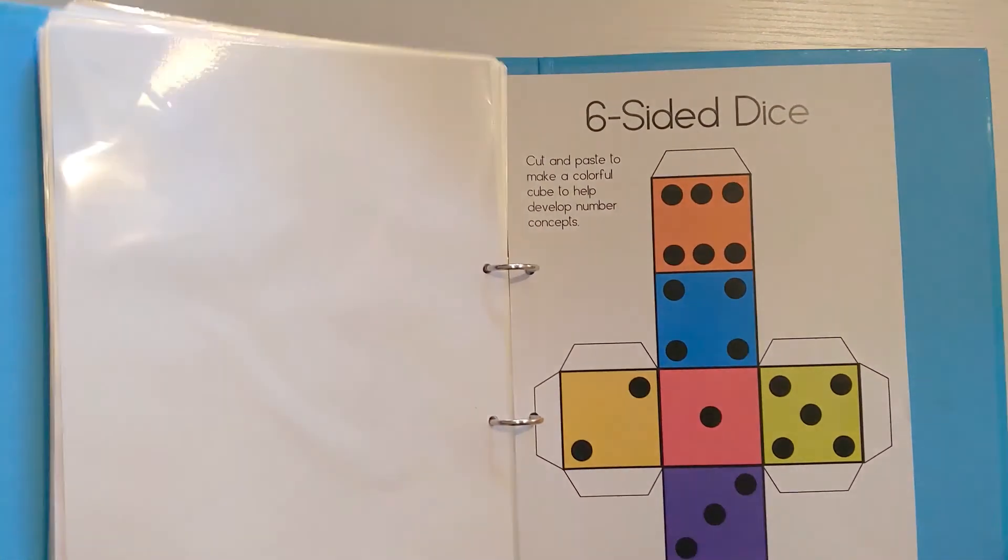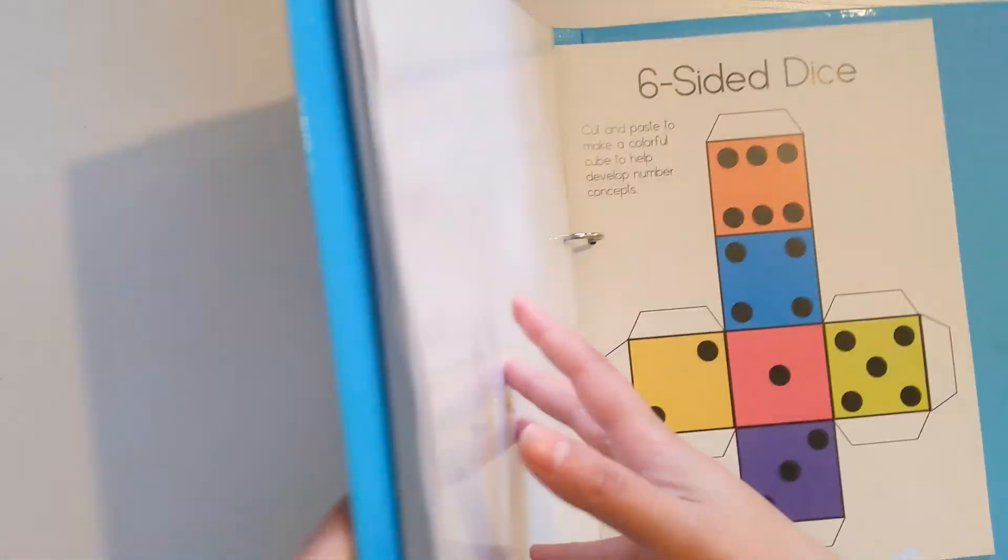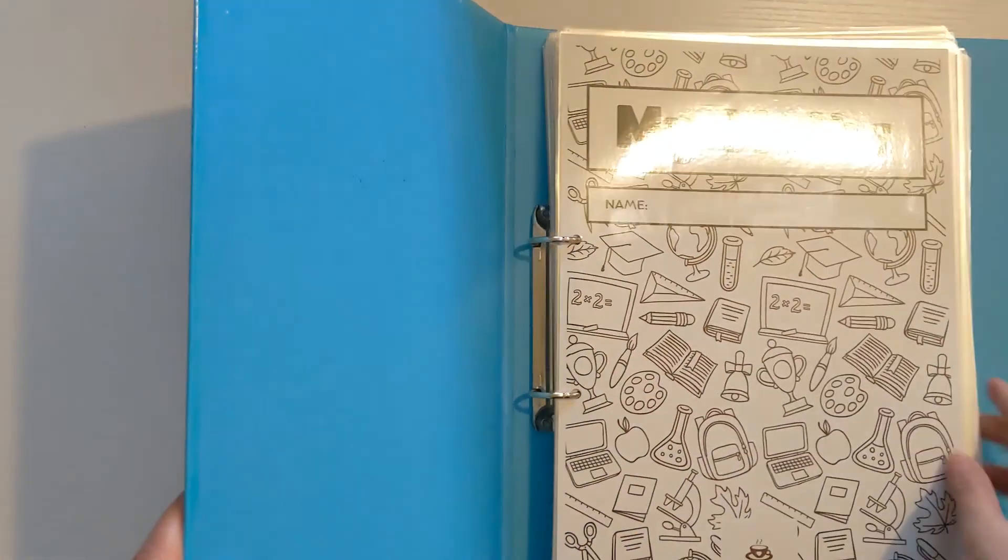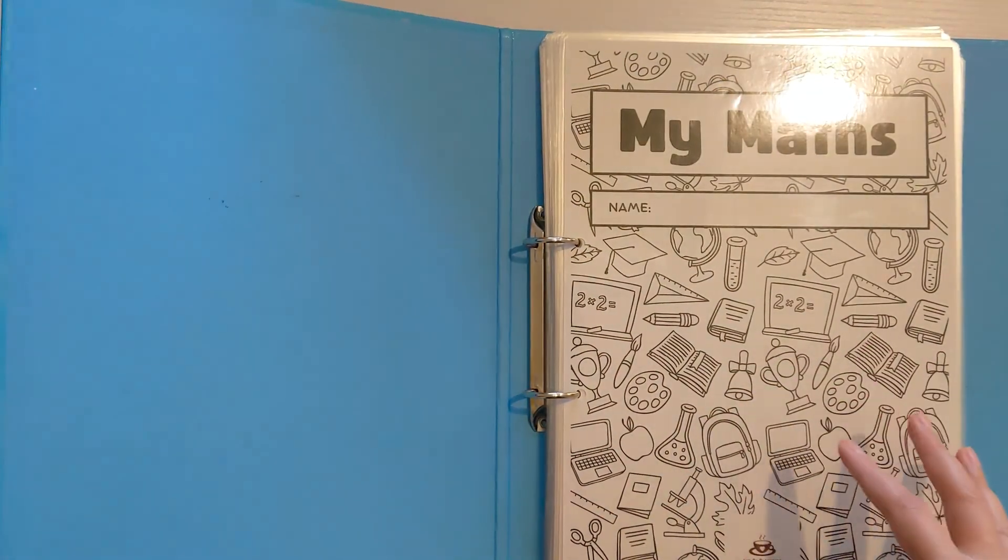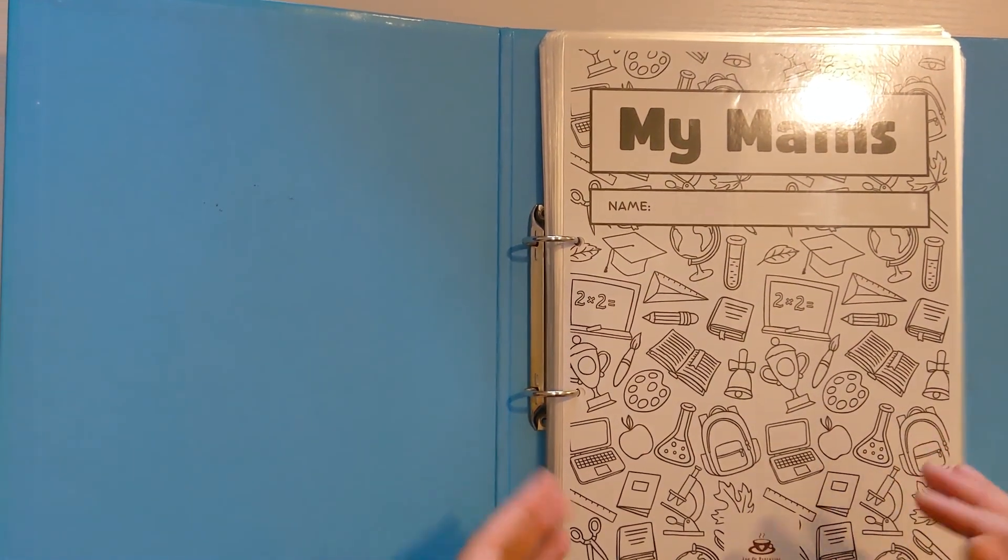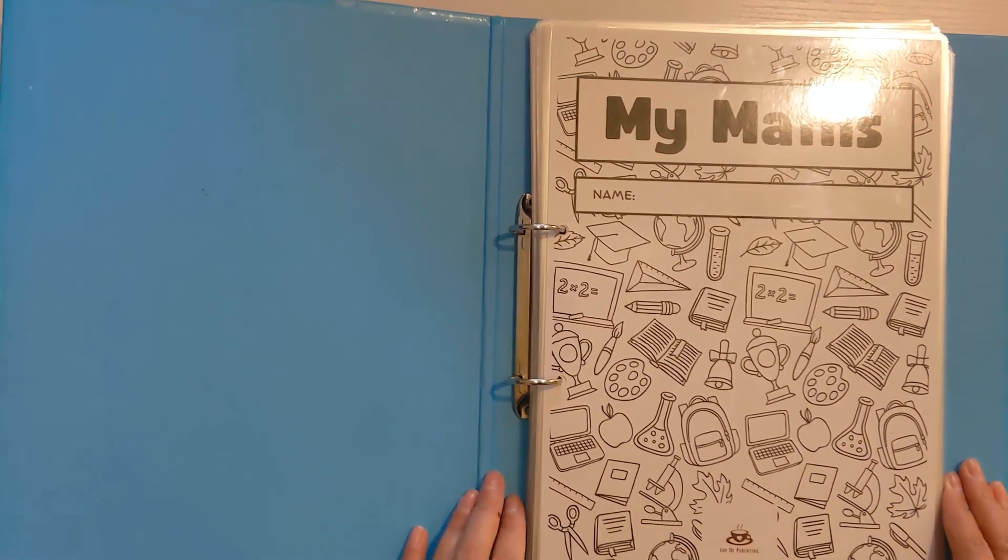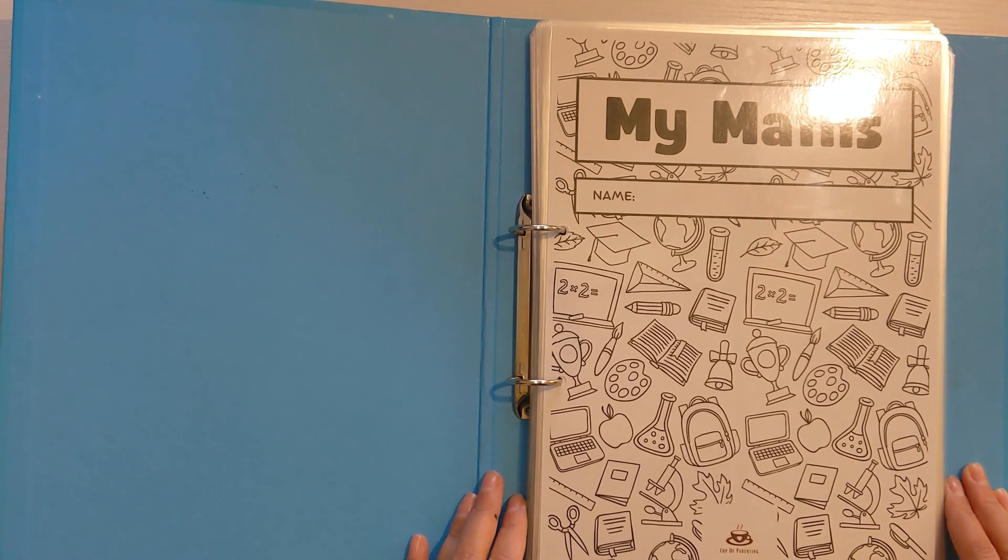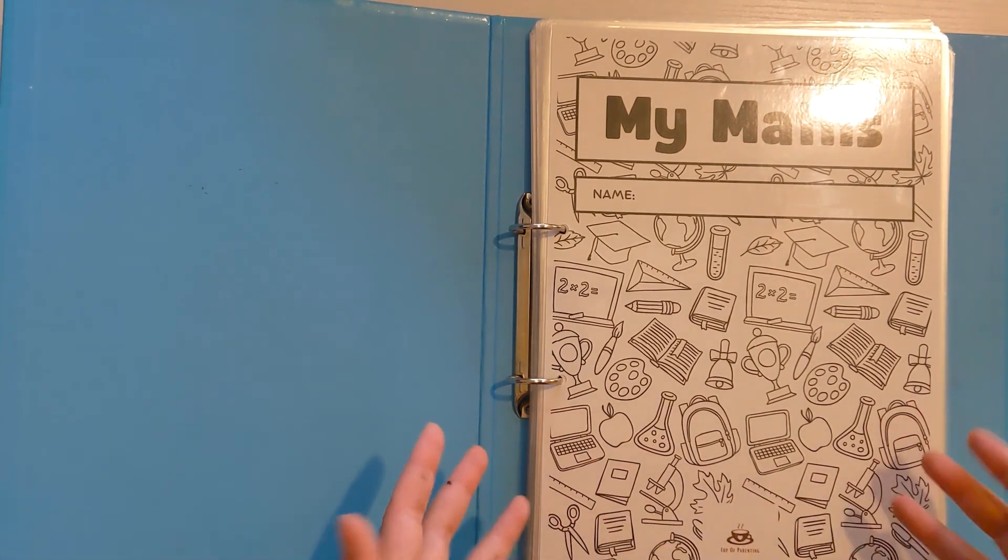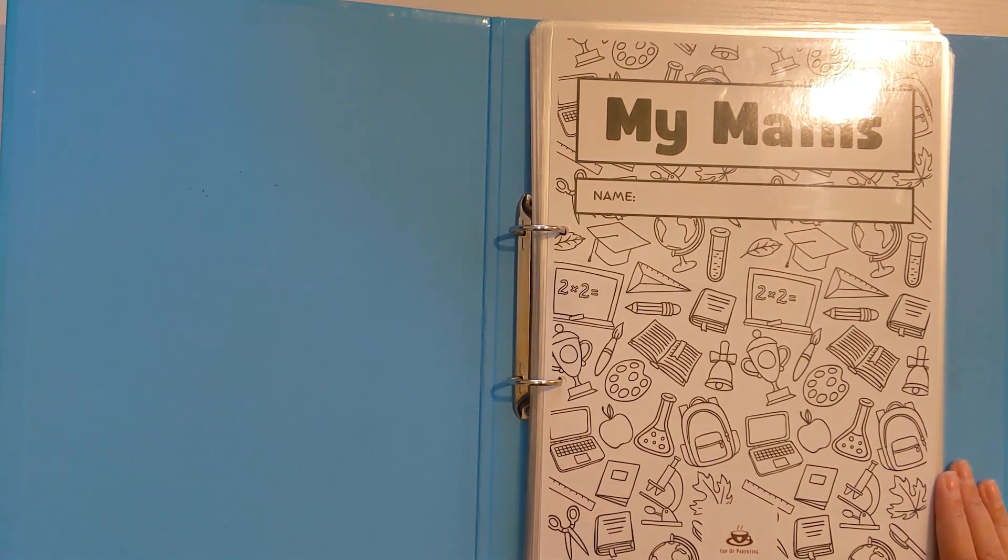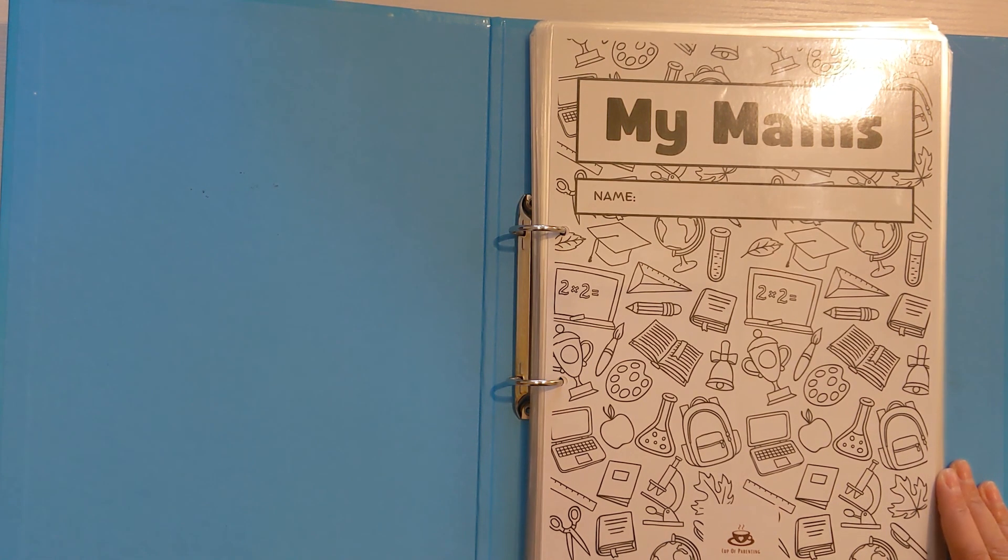I hope you found that useful and that gave you some ideas. If you do want to just use the same sheets that I've used, that I've pre-made for you, you can click on a link in the description box below and purchase them from my Etsy shop. Otherwise, feel free to take these ideas and make your own Maths Busy Book at home. I hope you have lots of fun using it. Thank you for watching.